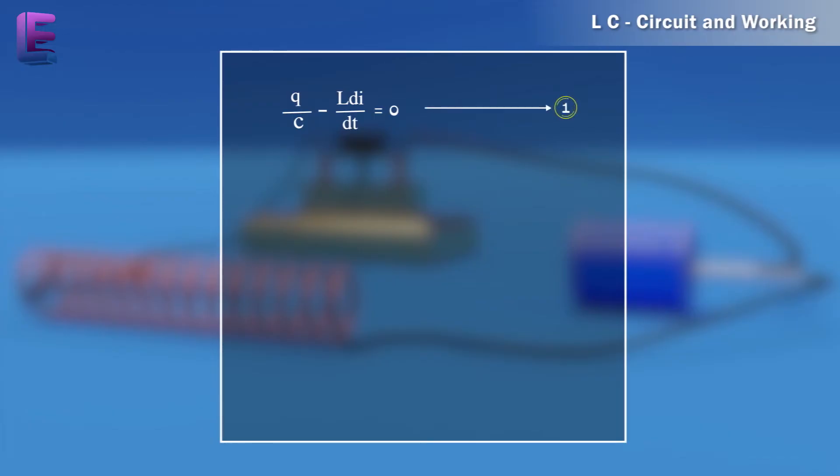However, in the present case, as q decreases, i increases. Therefore, i equals minus dq by dt. Therefore, the first equation can be written as d square q by dt square plus q by LC equals 0.